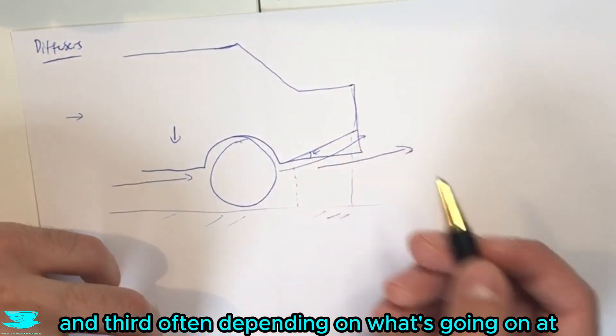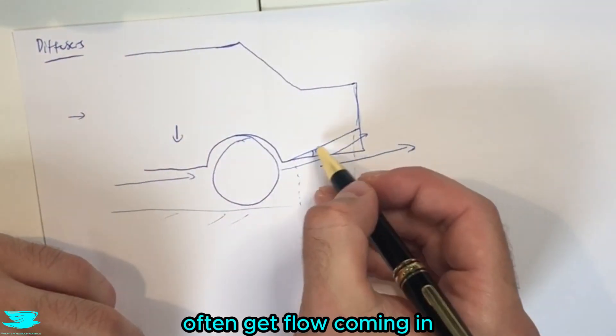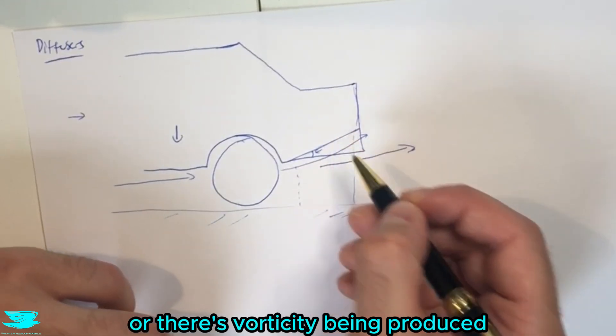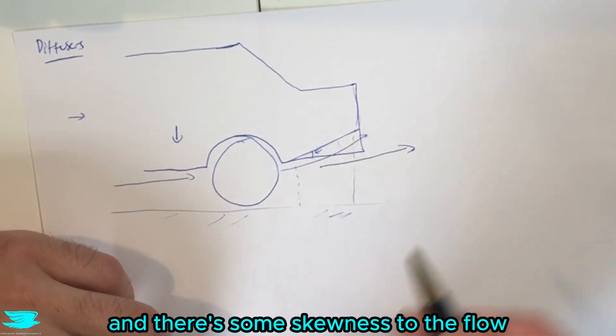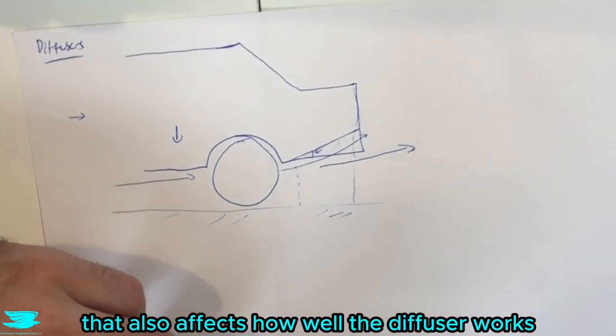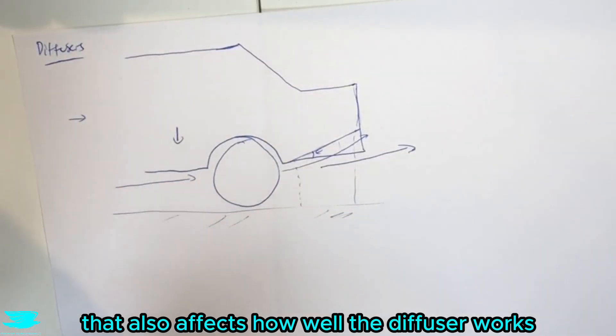And third, often depending on what's going on, the size of the car, we often get flow coming in or there's vorticity being produced and there's some skewness to the flow into the page or out of the page. That also affects how well the diffuser works.